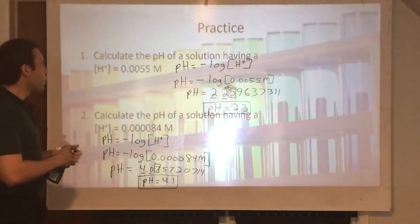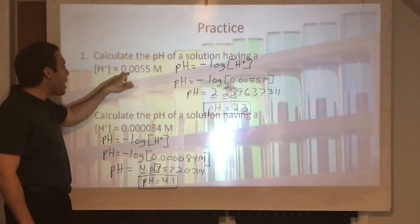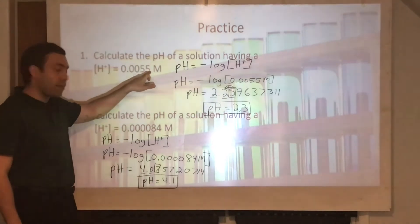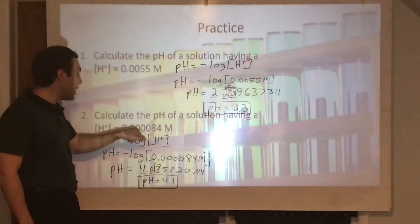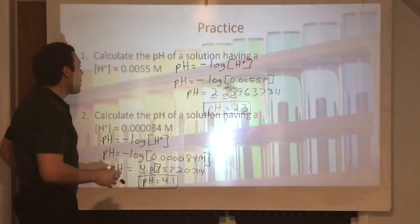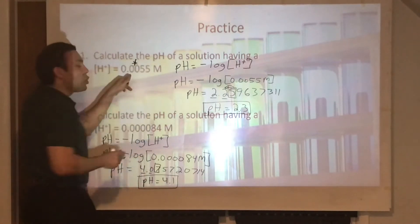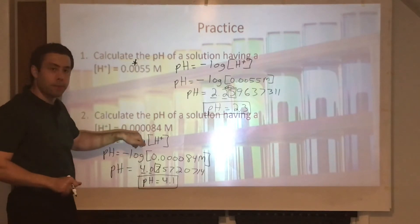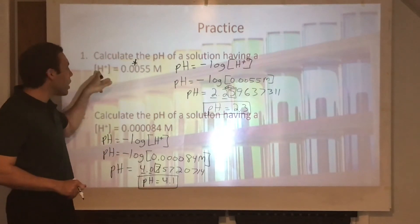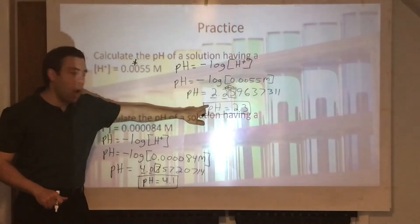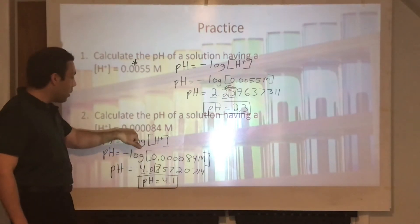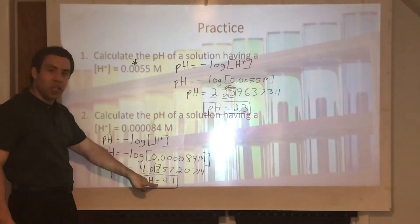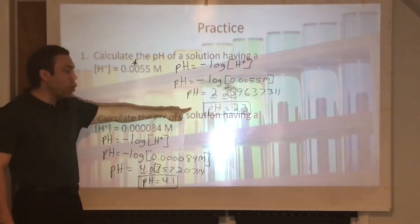Notice that problem one had an H-plus concentration of 0.0055, while problem two had 0.000084. The concentration in problem one is higher. A greater concentration of H-plus ions means a lower pH — farther down on the pH scale. Less hydrogen ions means a higher pH; more hydrogen ions means a lower pH.